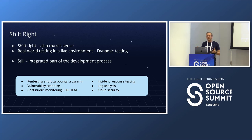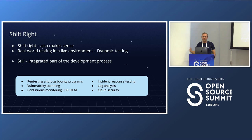Everything is an integrated part of the development process. Examples of shifting right include pen testing and bug bounty programs — bug bounty programs must be done in a live environment. Some vulnerabilities are only visible in a live environment, and log analysis must be done when you have logs.